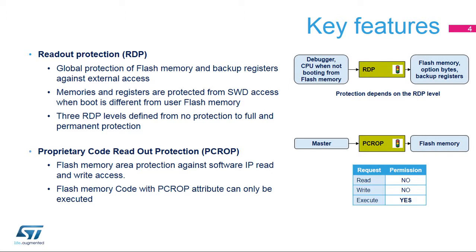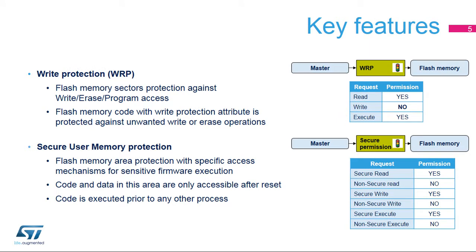PCROP is a memory access protection against code dumping, used to protect the intellectual property of the code. The protected firmware remains executable, but read and write access performed by the CPU executing malicious third-party code, like a Trojan Horse, are prohibited. The write protection mechanism prevents accidental or malicious write and erase operations. Secure User Memory is a flash memory area with a specific protection mechanism to ensure the safe execution of sensitive firmware. All protection mechanisms are configurable via the STM32G0 option bytes.